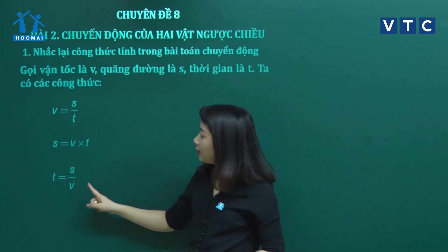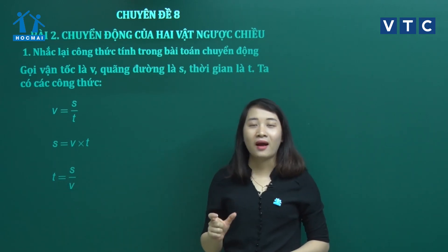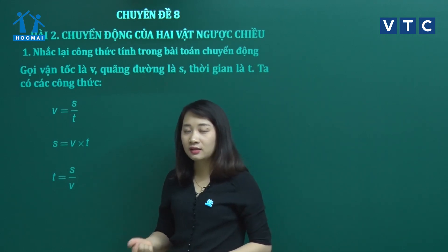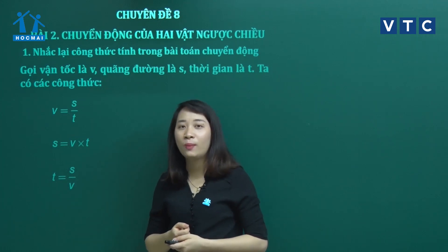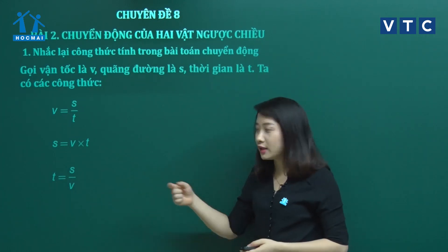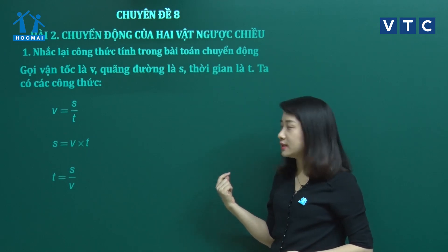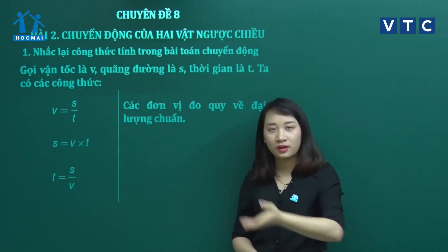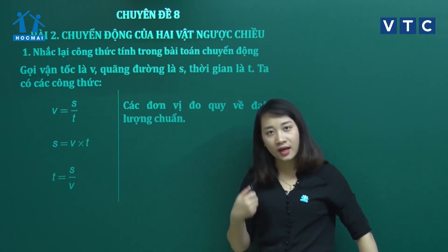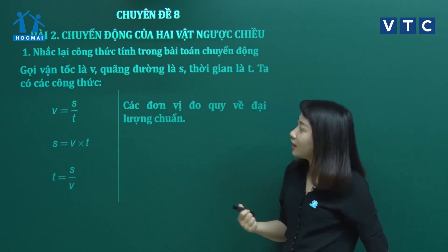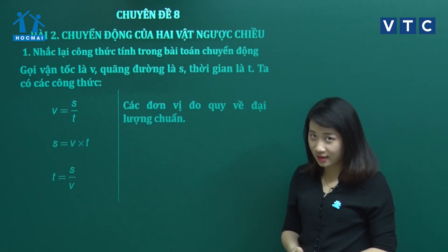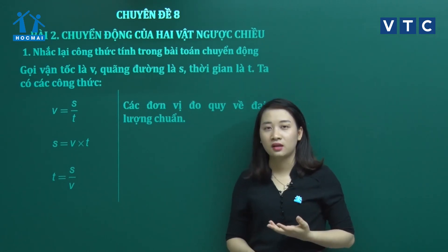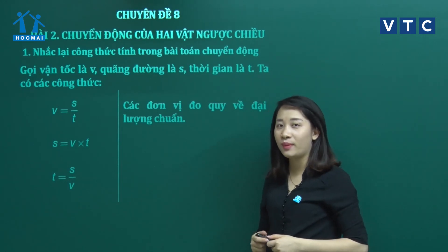Vận tốc V là quãng đường đi được trung bình trong một giờ hoặc trong một giây, thường được tính bằng các đơn vị như mét trên giây hoặc km trên giờ. Trong những công thức này, chúng mình cần lưu ý đổi các đơn vị đo về đại lượng chuẩn: quãng đường đổi về km hoặc m, thời gian đổi về giờ hoặc giây, vận tốc dùng đơn vị m/s hoặc km/h.